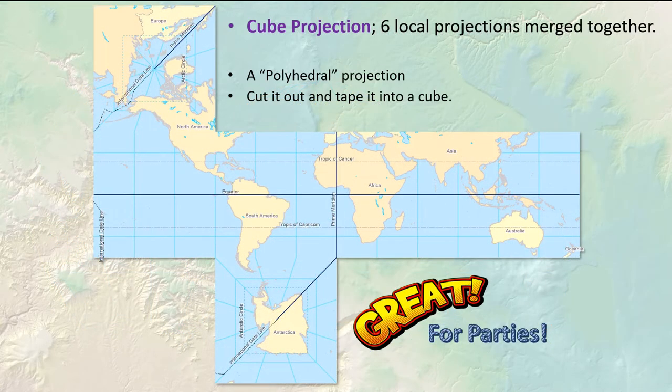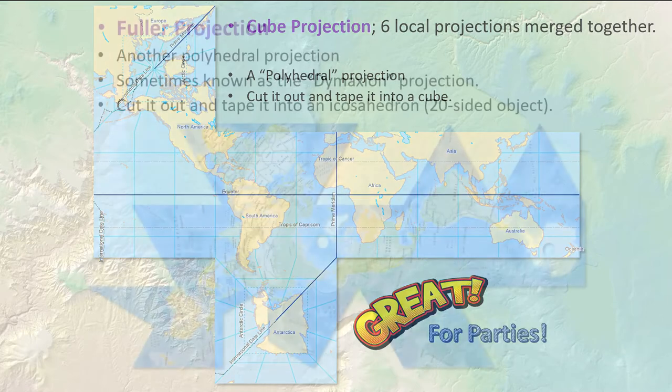This cube projection is just fun. It's not really useful for any kind of analysis, but you can print it up, cut it out, and fold it into a cube. This is called a polyhedral projection — it means you take the same shape and form it over the surface of a sphere. In this case we're taking squares and forming it.